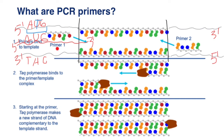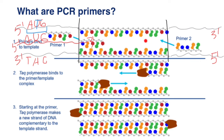Now, which primer is the forward primer and which is the reverse primer? When a primer goes here and extends a new strand of the DNA that is going to be the same sequence as messenger RNA, we say that this is going to be the forward primer. So the forward primer makes a new strand of the DNA that is the coding strand, the sense strand, the positive strand of the DNA. It makes sense to call such a primer the forward primer. And the other one is going to be the reverse primer.